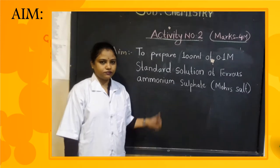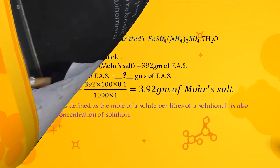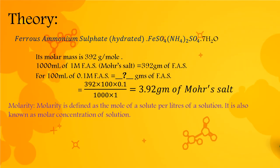Let's see the theory behind this. Ferrous ammonium sulphate in its hydrated form has the molecular formula FeSO₄·(NH₄)₂SO₄·7H₂O. Its molecular mass or molar mass is 392 grams per mole.